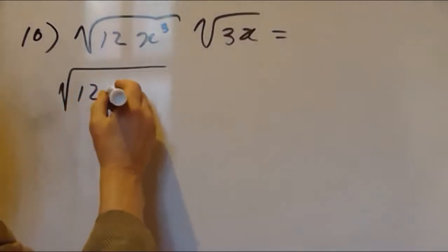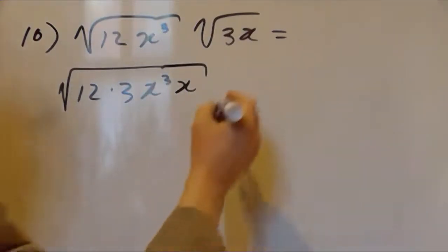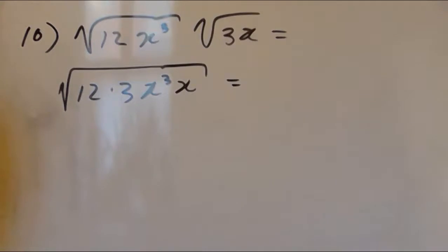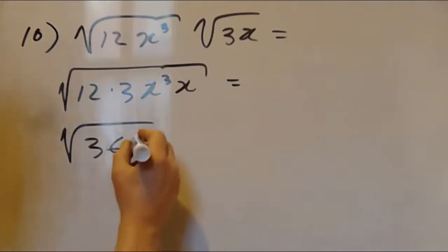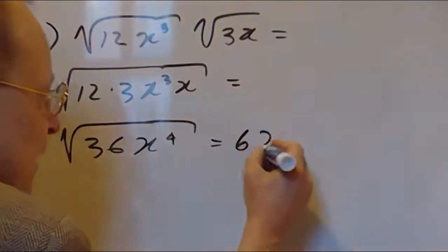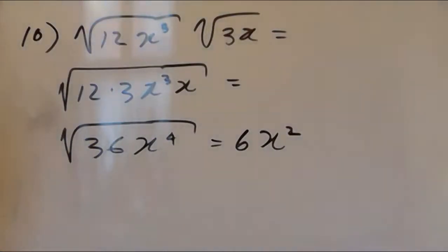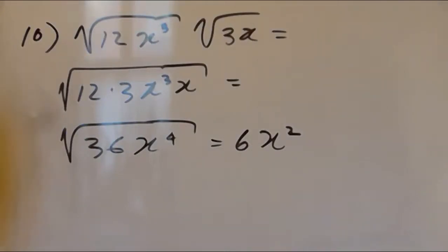So we have 12 times 3x cubed times x. That means 12 times 3 is 36, and then we add the exponents and we get x to the fourth. Since 36 is a perfect square, we end up with 6x squared. We do it the same way as regular algebraic equations, but we must simplify our radicals and combine them in that way.